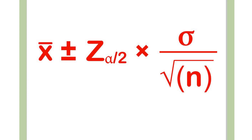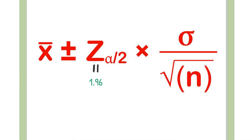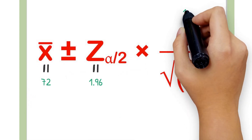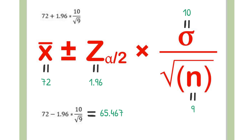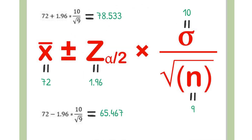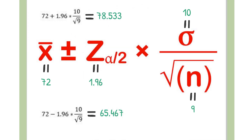Now let's plug in the numbers: x-bar of 72, population standard deviation of 10, and sample size n of 9. The lower bound of the confidence interval is 72 minus 1.96 times 10 divided by the square root of 9, which equals 65.467. The upper bound is 72 plus 1.96 times 10 divided by 3, which equals 78.533. Hence, we are 95% confident that the average exam 1 score for the entire class is between 65.467 and 78.533.